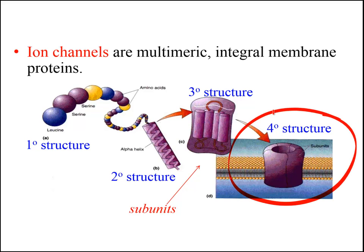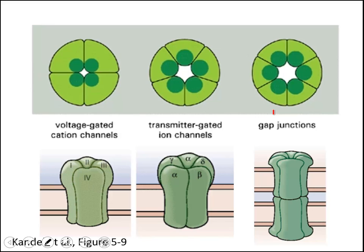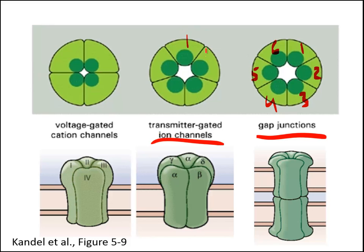The quaternary structure consists of four to six subunits that together form the whole channel protein. The number of subunits depends on the type of channel. For example, gap junctions are made up of six subunits, ligand-gated channels are made up of five subunits, and voltage-gated channels are made up of four subunits.